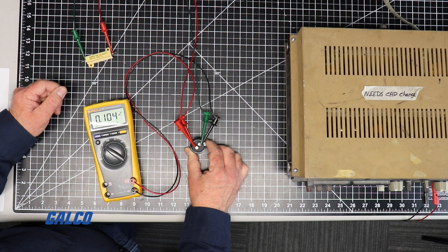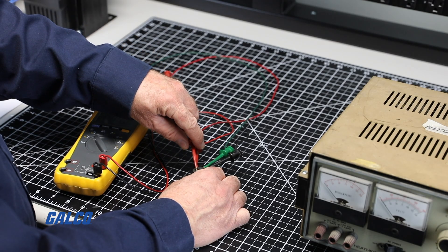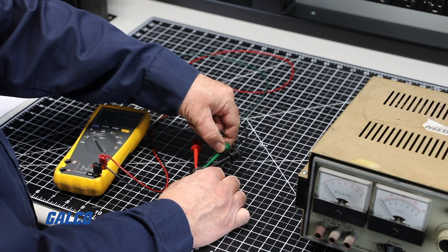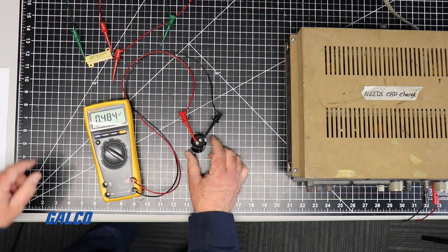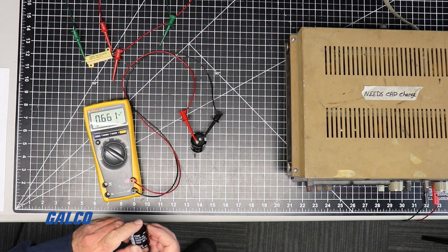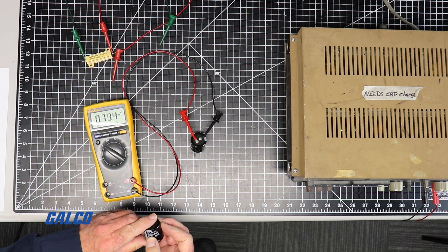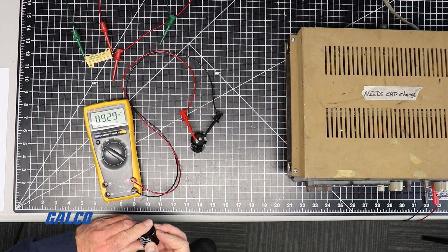You should also be aware that large, high-voltage electrolytic capacitors tend to recharge themselves a little bit once the discharge resistor is removed. After 15 to 30 minutes, it may reach 20 to 40 volts.